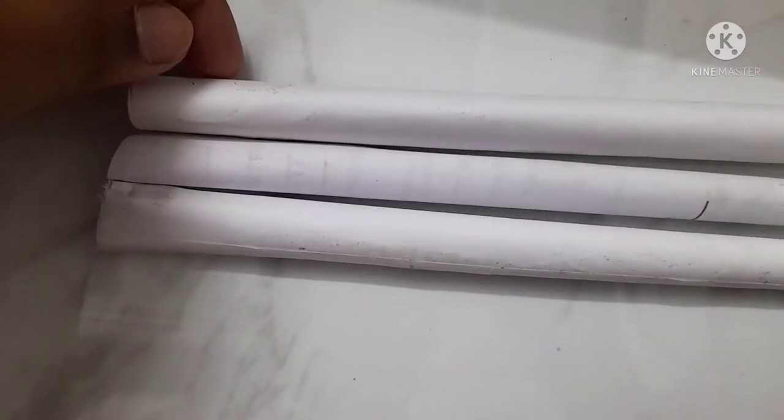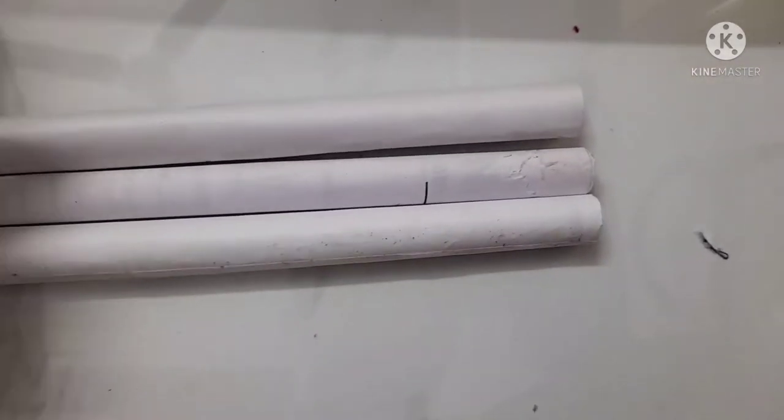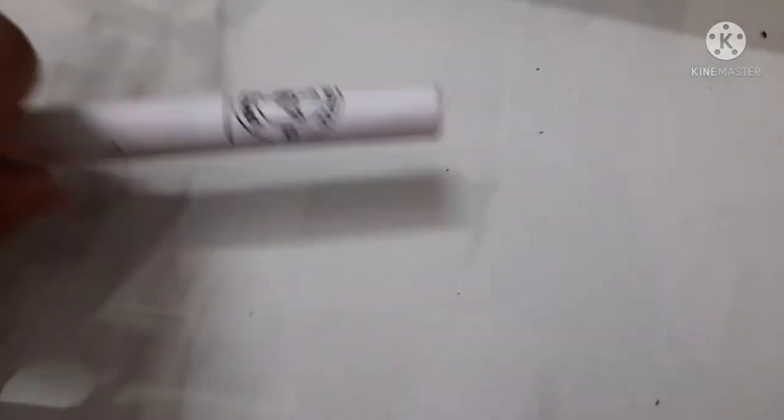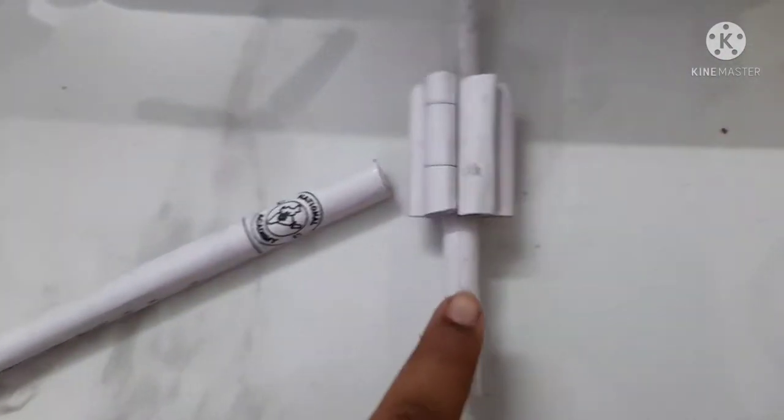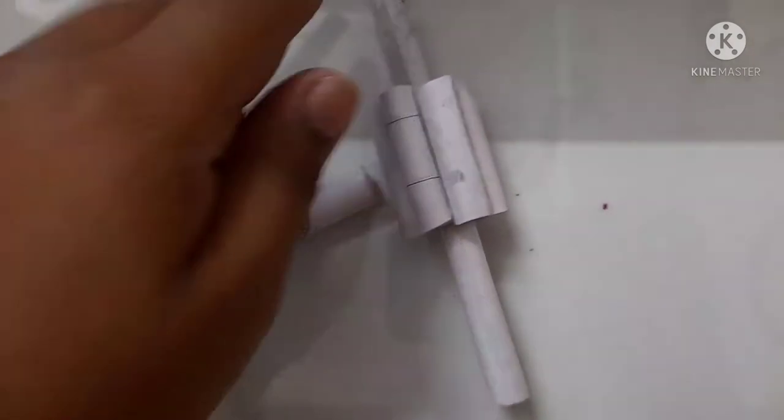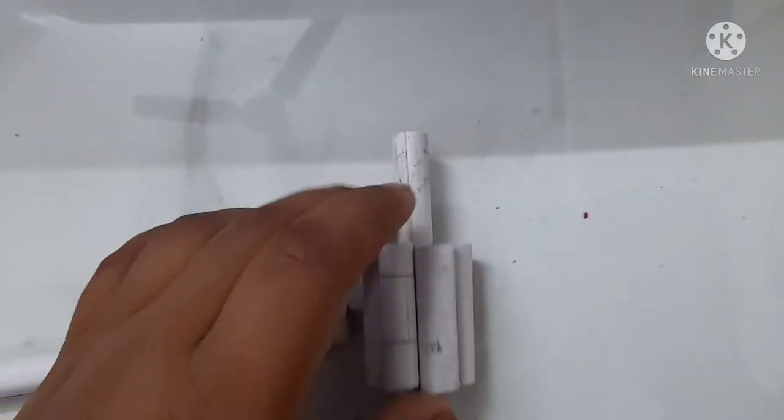I'm going to use it from Resident Evil 5 and Revelations 2. So here I have three pipes or paper rolls, and in one of the rolls I'm going to insert a pipe which has six rounds. I have fitted it like this, you can see.